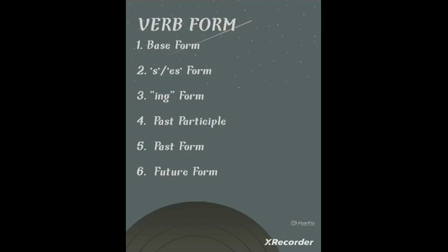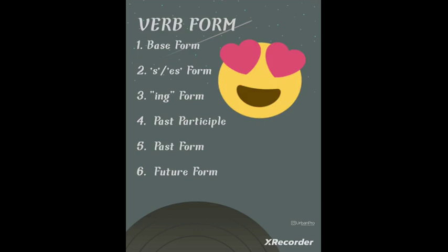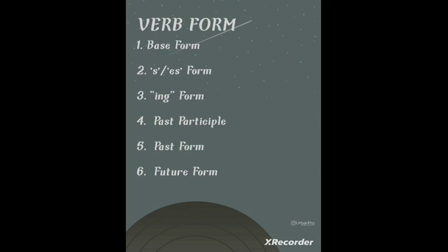Hello learners, welcome to the channel 'Be a Learner.' Today in this session I'm going to explain the different verb forms. We have heard about the verb — what is a verb? A verb is an action word which describes an action. For example: run, laugh, eat — these are all actions, so in grammatical language it is known as a verb. Now let us understand what the different verb forms are. There are six types of verb form.